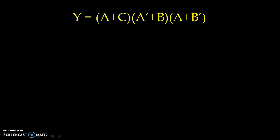Now let us take one more example. And that is the POS type of Boolean function. We have product of sum. So we have different three sum terms: A plus C, A bar plus B, A plus B bar. And then we have multiplied all the sum terms.